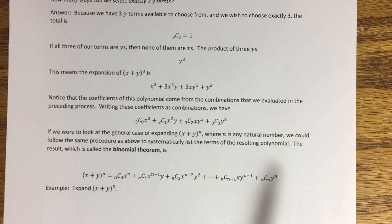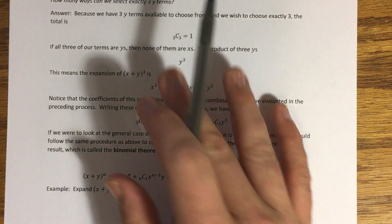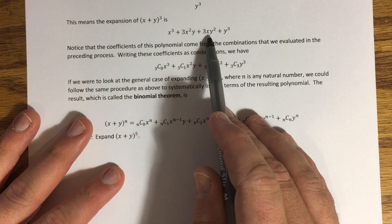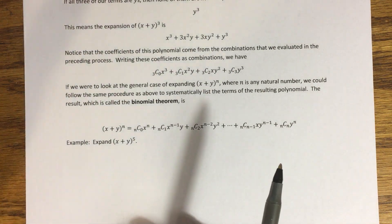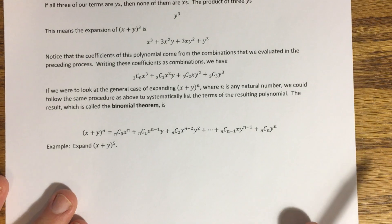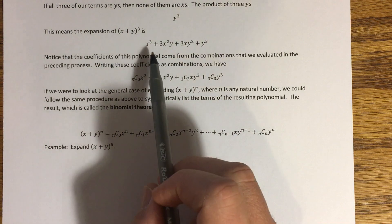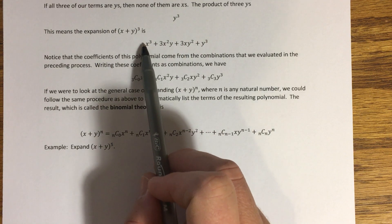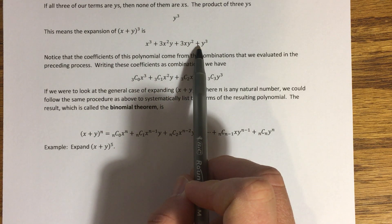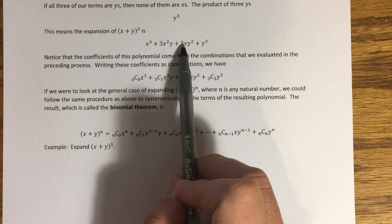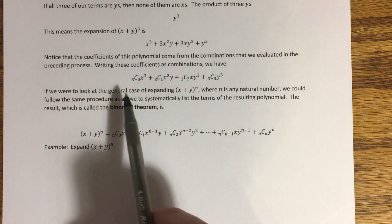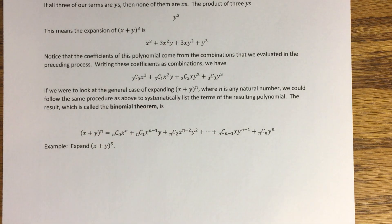Putting those four results together, X plus Y cubed equals X cubed plus three X squared Y plus three XY squared plus Y cubed. The coefficients all came from combinations: three choose zero, three choose one, three choose two, three choose three. Notice a pattern emerging in those combinations and the exponents on X and Y.